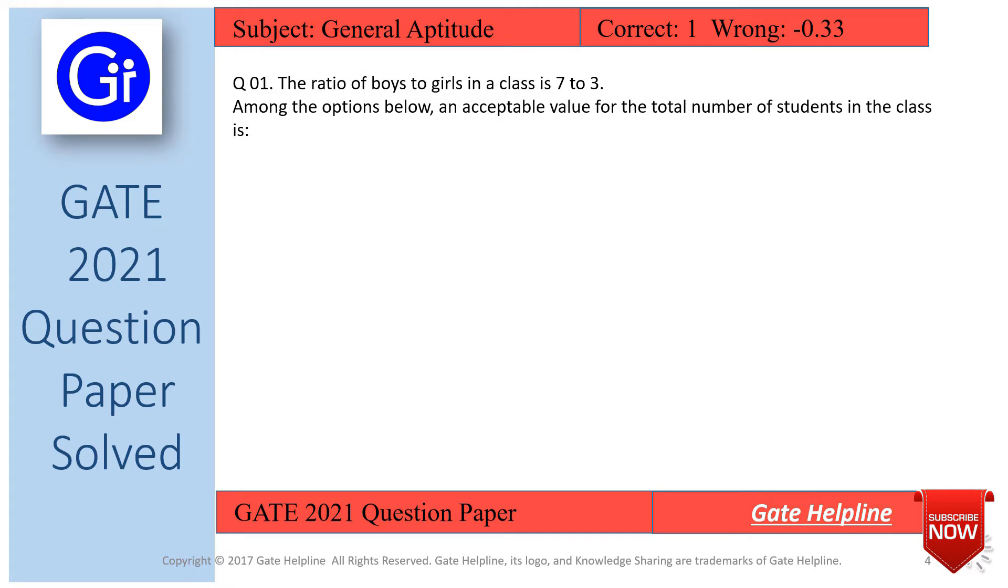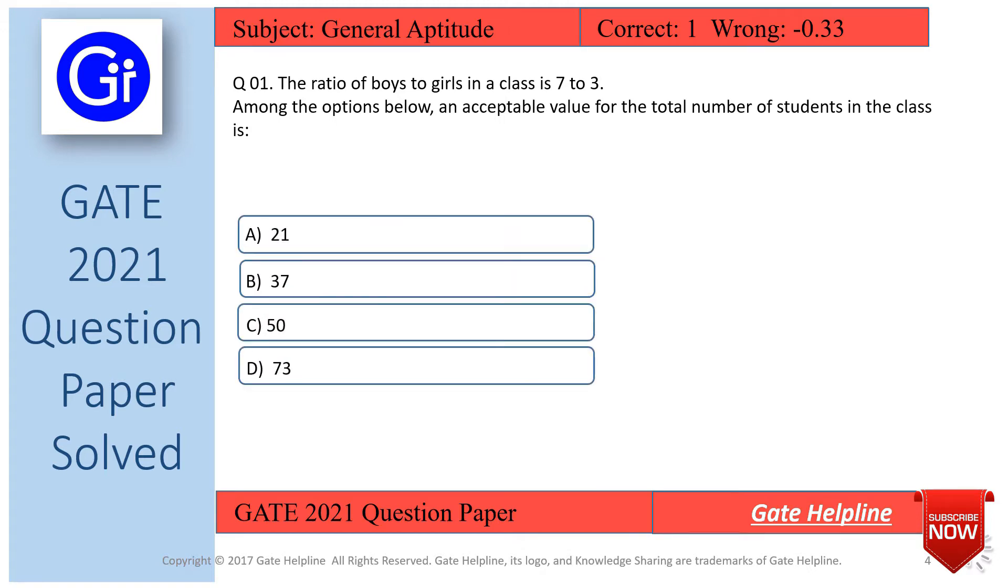The ratio of boys to girls in a class is 7 to 3. Among the options below, an acceptable value for the total number of students in the class is: A) 21, B) 37, C) 50, D) 73.